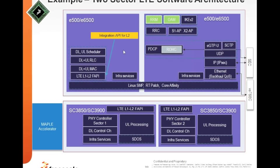Layer 2 functionality is on one core, while radio resource management and SON-type functionality are on another, along with Ethernet backhaul interfaces and PDCP processing. Upper layer processing is dedicated to one core, the scheduler and MAC to another, and the two DSPs work in concert to support two-sector operation. This is an example of how software architecture can be employed to provide the required performance.